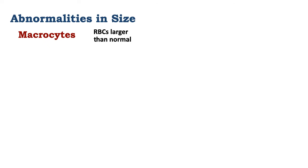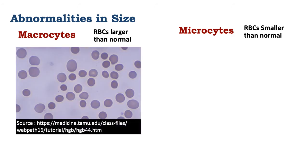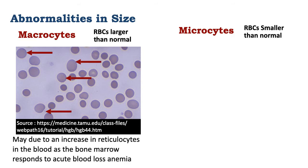Abnormalities in size: macrocytes are red blood cells that are larger than normal, while microcytes are red blood cells that are smaller than normal. In this slide picture, we are seeing macrocytes indicated by the red arrows. Those cells are larger than all the other red blood cells. The macrocytes here have occurred because of an increase in reticulocytes, or immature red blood cells being released from the bone marrow.